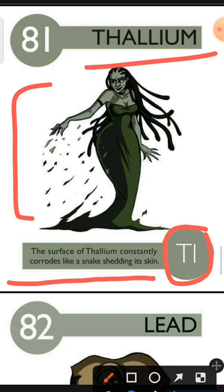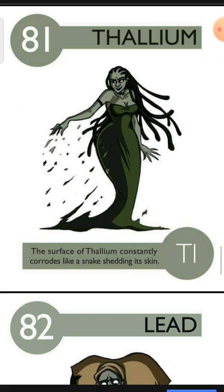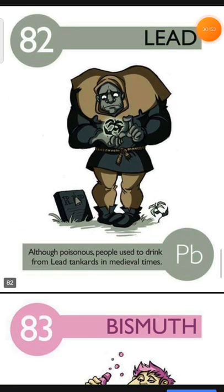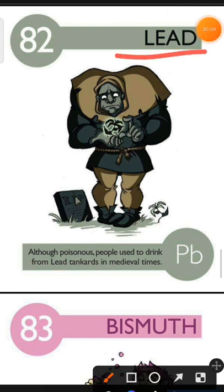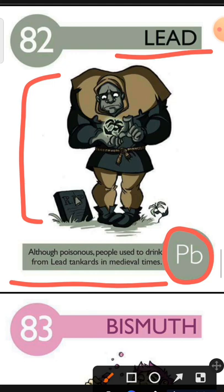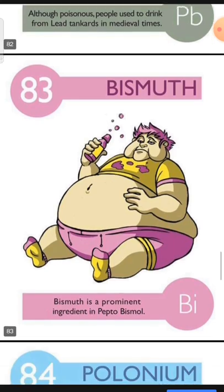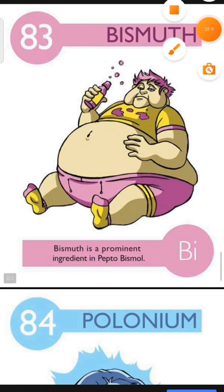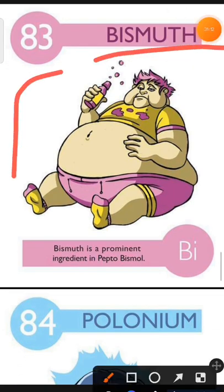Element number 82 is Lead. The characteristic of Lead is: although poisonous, people used to drink from lead tankards in medieval times. Element number 83 is Bismuth. The characteristic of Bismuth is: Bismuth is a prominent ingredient in Pepto-Bismol.